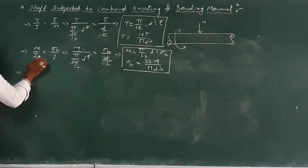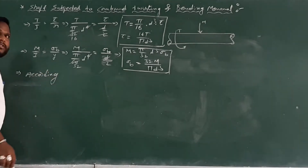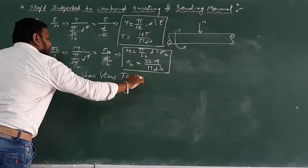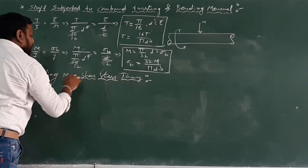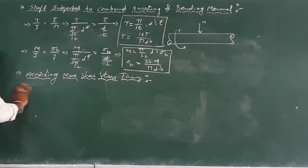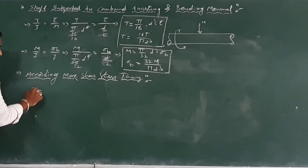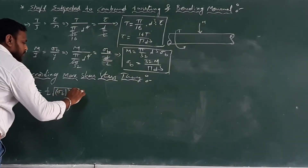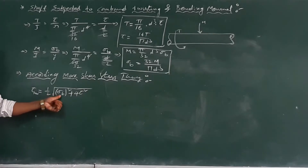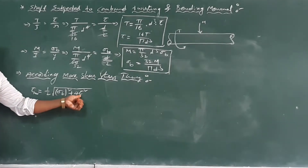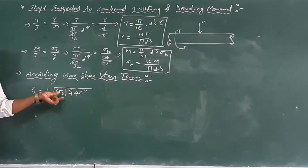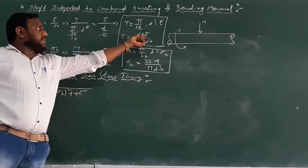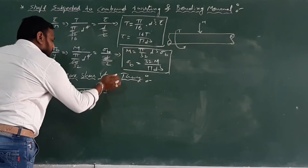According to maximum shear stress theory, tau_max equals one-half times the square root of sigma_b squared plus 4 tau squared. With sigma_b equals 32M by pi D cubed and tau equals 16P by pi D cubed, this gives tau_max.